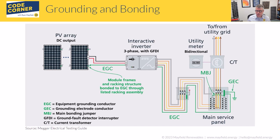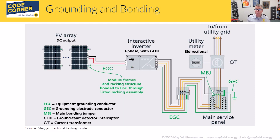Module frames are bonded to the EGC through a listed racking assembly. There are ways of using a non-wire type piece of metal — in PV systems, using the racking system itself as the equipment grounding conductor. You can use listed components to bond the modules to the racking system, making that bond from module frame to racking, then bond the racking back to the rest of the grounding system. The National Electrical Code also allows conduit as an equipment grounding conductor when done properly, but in PV systems we very often use wire-type equipment grounding conductors.